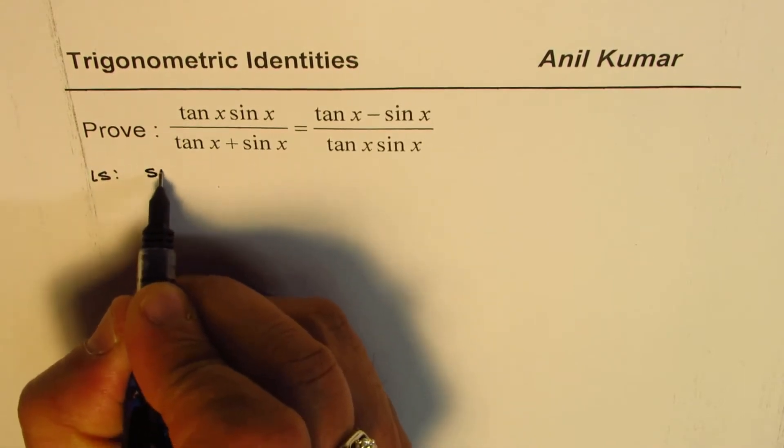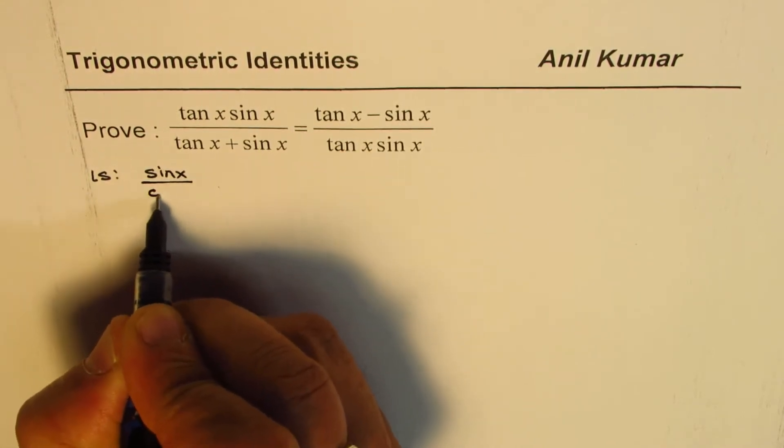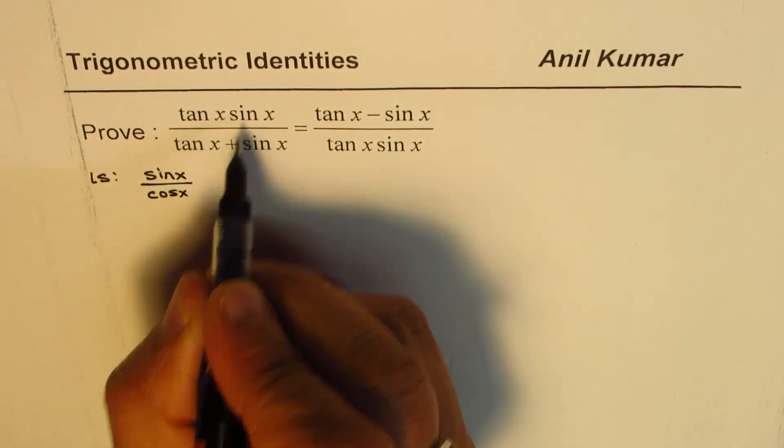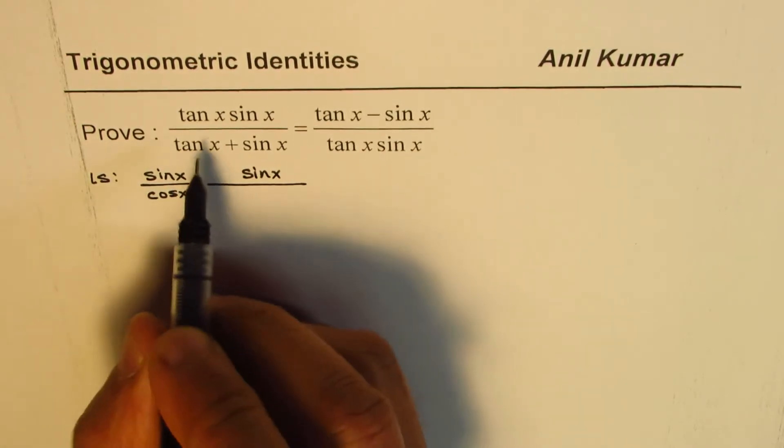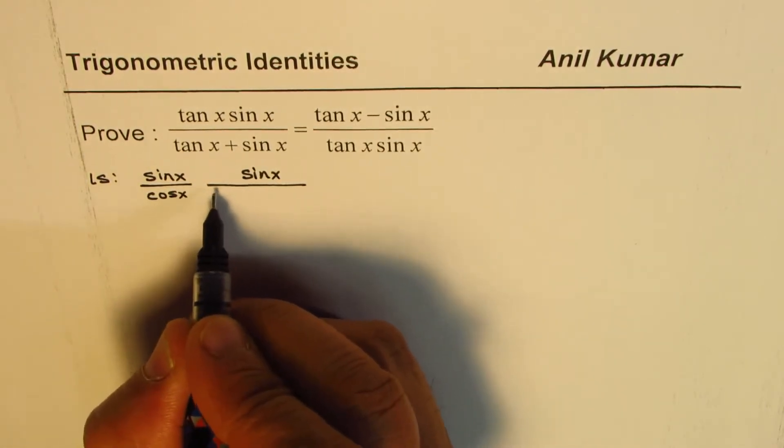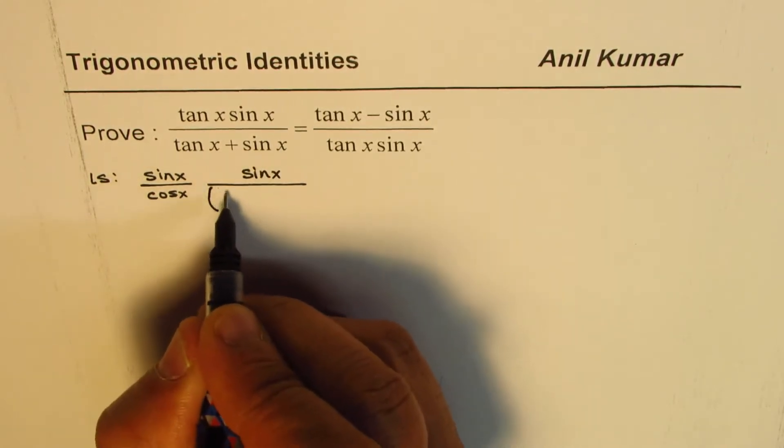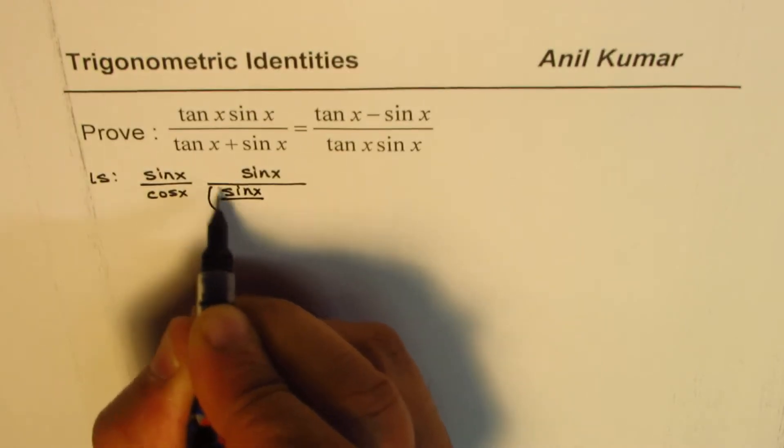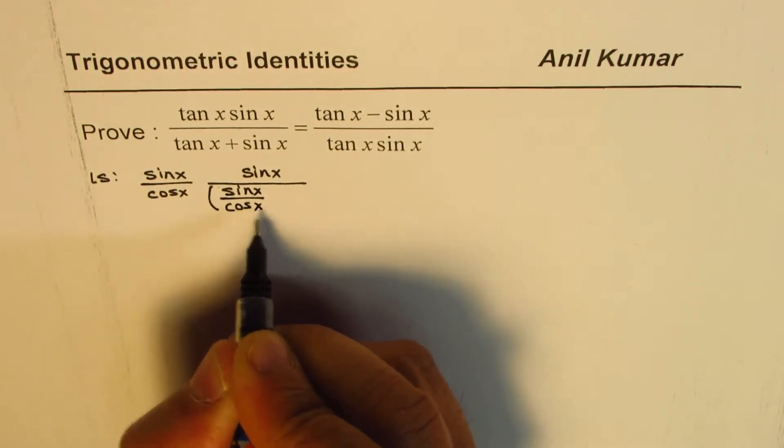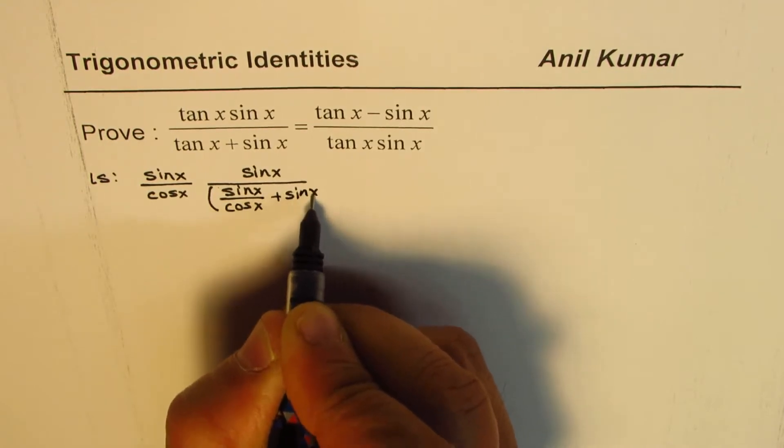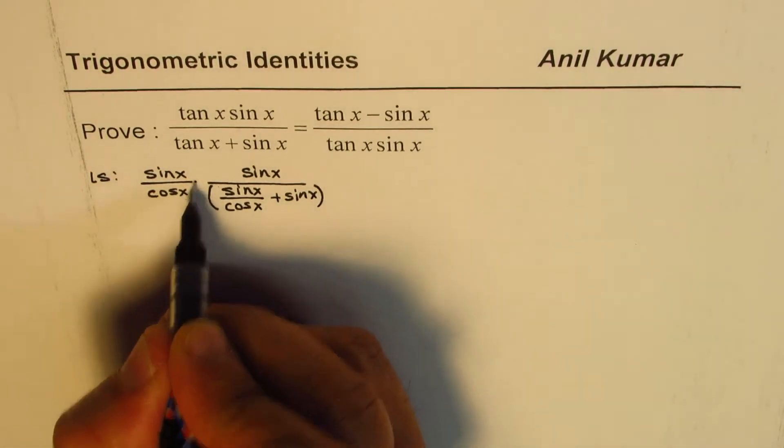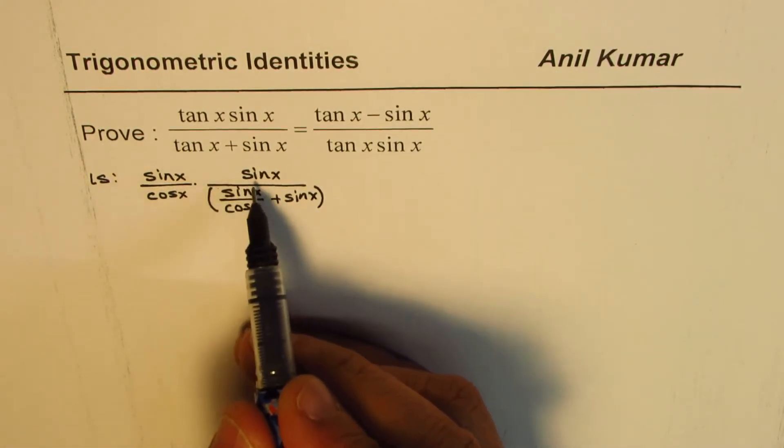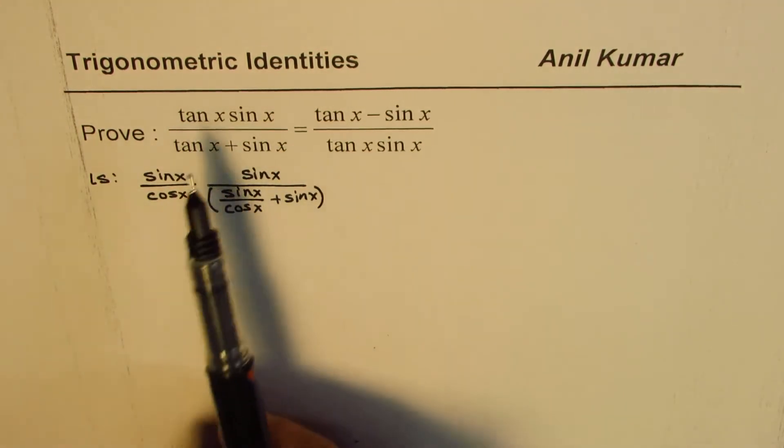What we can do here is write tan x as sine over cos. So I'll write this tan x as sine x over cos x. Now we have sine x here, so I'm just writing sine x, divided by tan x plus sine x. I'll write this tan x as sine x over cos x plus sine x.